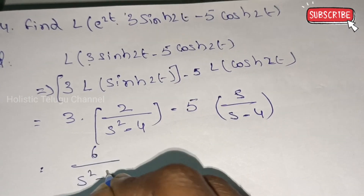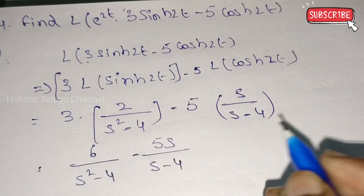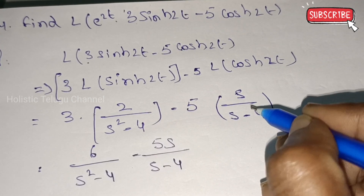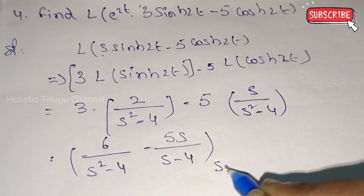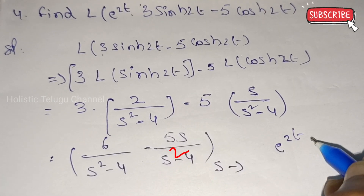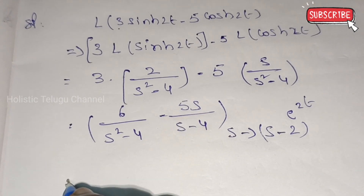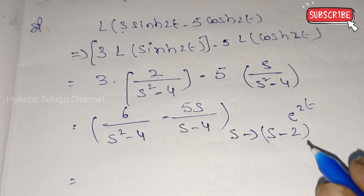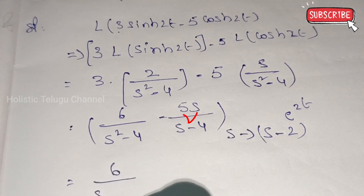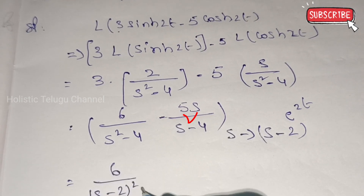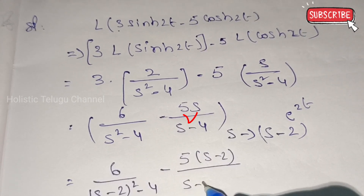So we get 6 by (s² minus 4) minus 5s by (s² minus 4). Now we need to replace s with (s minus 2) because we have e^(2t). So s is replaced by (s minus 2). This gives us: 6 by (s minus 2)² minus 4, minus 5 into (s minus 2) by (s minus 2)² minus 4.